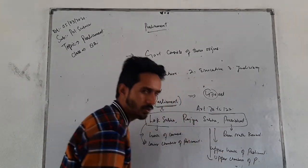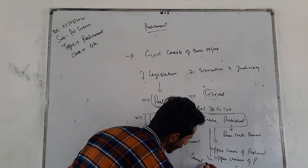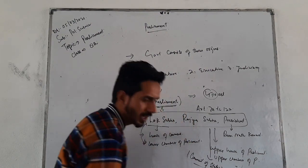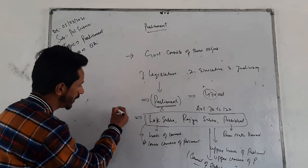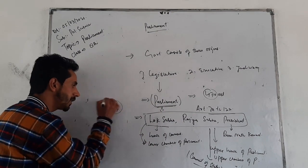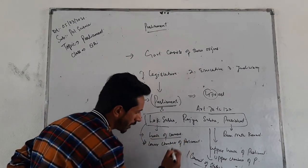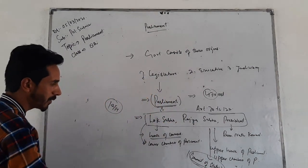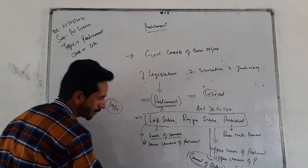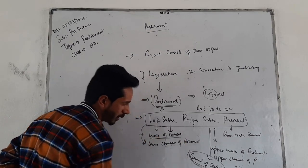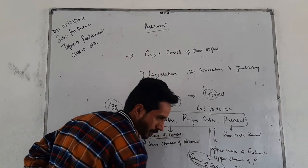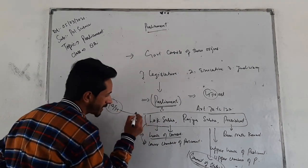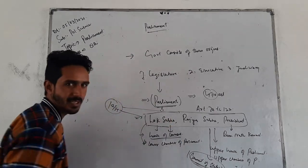Rajya Sabha is also known as the Council of States. In 1954, the names of these houses were changed — Lok Sabha was previously the House of Commons, and Rajya Sabha was the Council of States. Their names were renamed as Lok Sabha and Rajya Sabha in 1954.